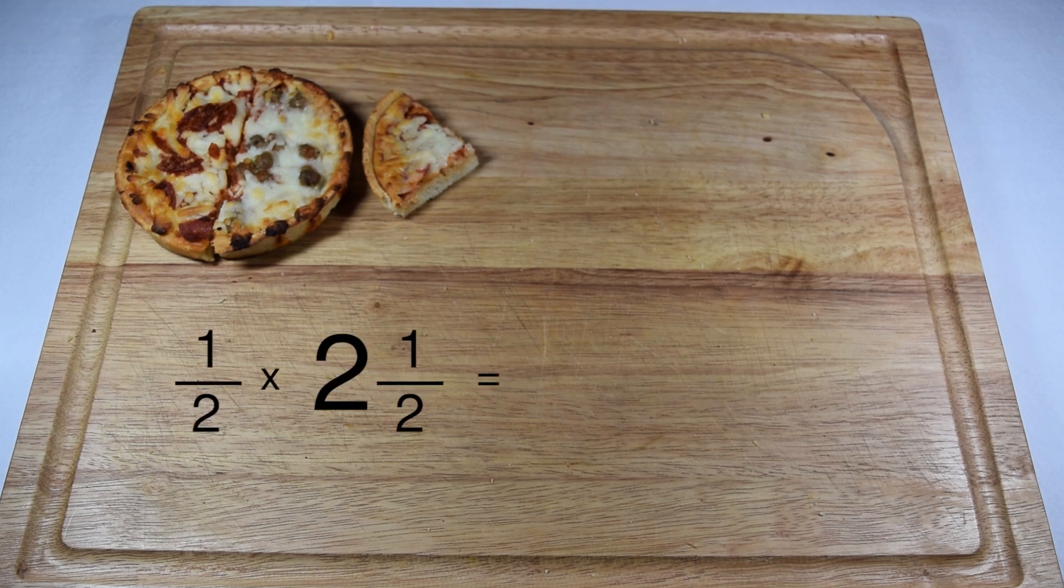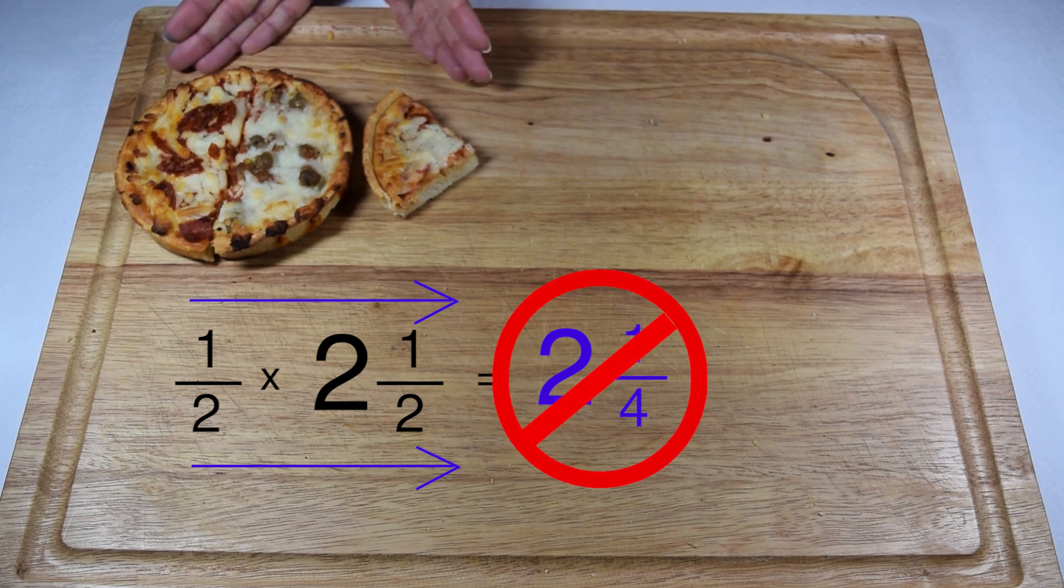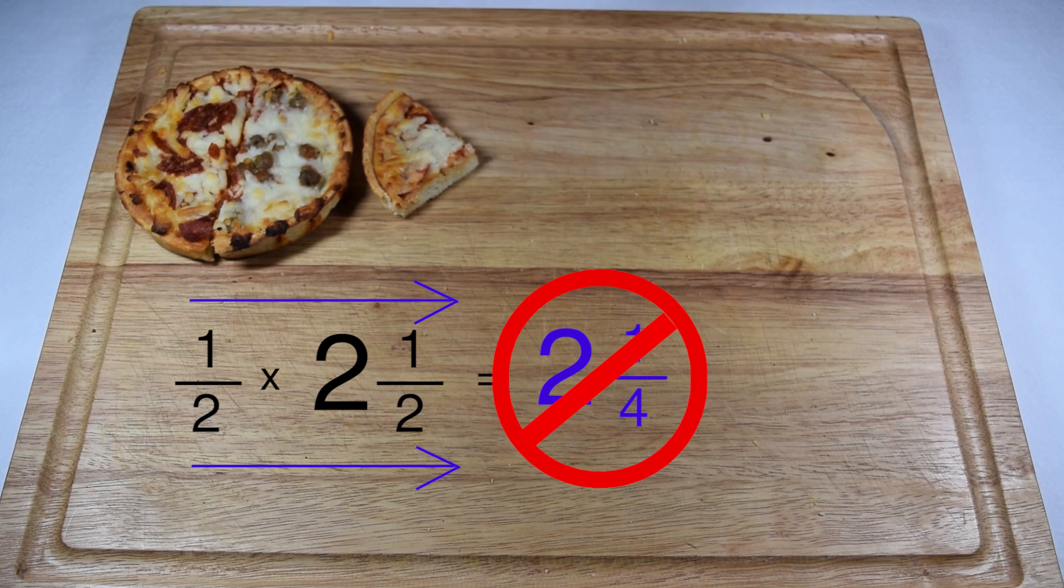Now, a common mistake people make is since two and a half is a mixed number, and one half is a fraction, they go ahead and multiply the numerators of the fractions together and the denominators together. One half times one half would give me one-fourth, and then the whole number two just drags along, so their answer would be two and a fourth pizzas. Well, we know that's not right because we only ate one and a fourth pizza. So there has to be something more we need to do before we can solve that.